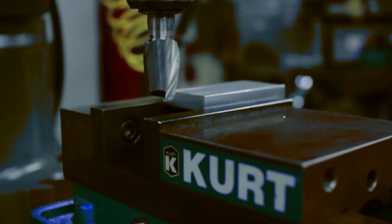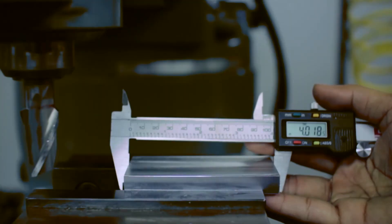For time considerations, we have already machined five sides of the part. All we have to do now is cut the part to length. Our target length is four inches. We are currently at four inches and eighteen thousandths of an inch over our target.